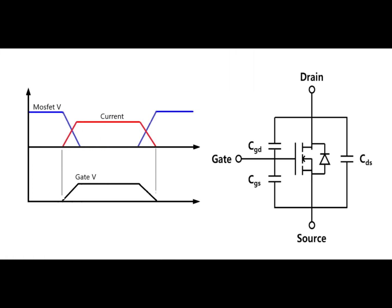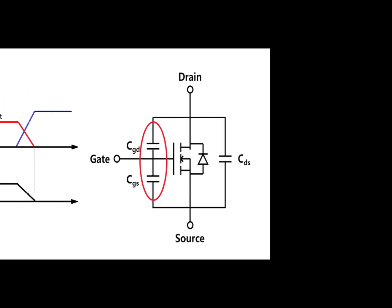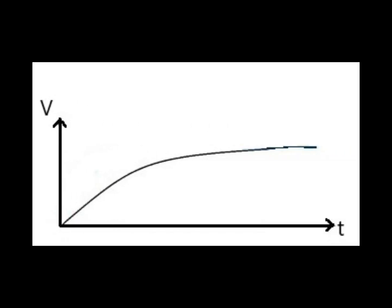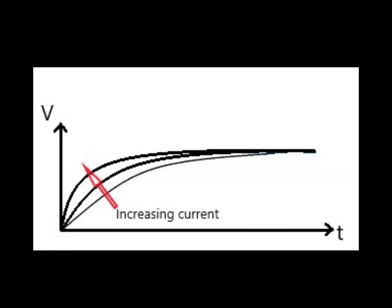The reason that MOSFETs and IGBTs can sometimes switch on slowly is because they have an internal capacitance at their gate, which means it takes longer for the gate to reach the necessary switch on voltage unless we can supply the gate with large currents very quickly. This is a typical curve of the voltage on a capacitor when we charge it up. If we increase the current we can make it charge faster.